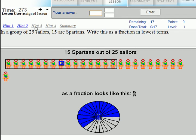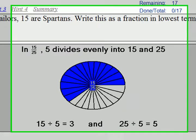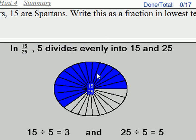In the next hint, we start with the fraction 15 out of 25, and we find that 5 is the greatest common factor that divides evenly into both 15 and 25.